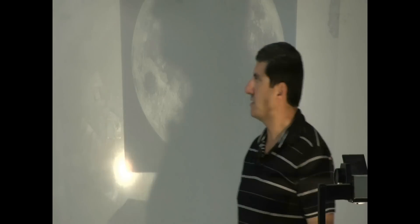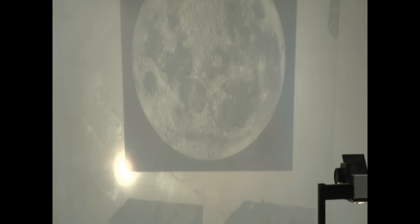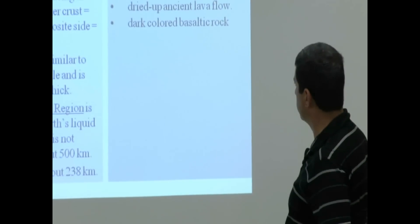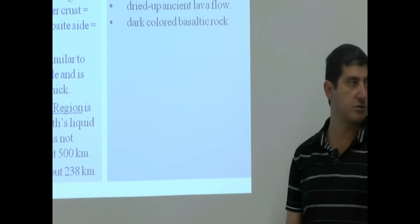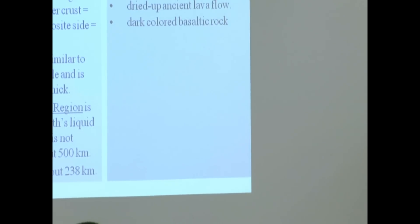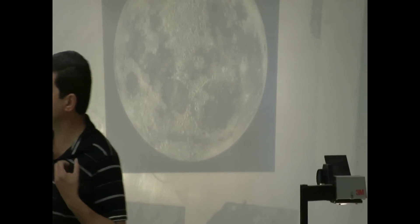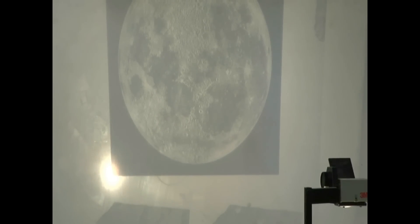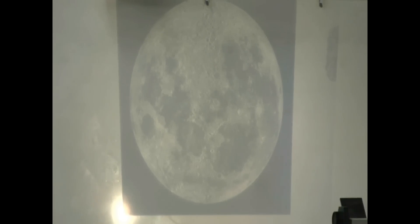Maria means seas. Dried up ancient lava flow. That's what they are. They contain dark colored basaltic rock. And denser. They are denser and younger rock than the rock of the highlands.